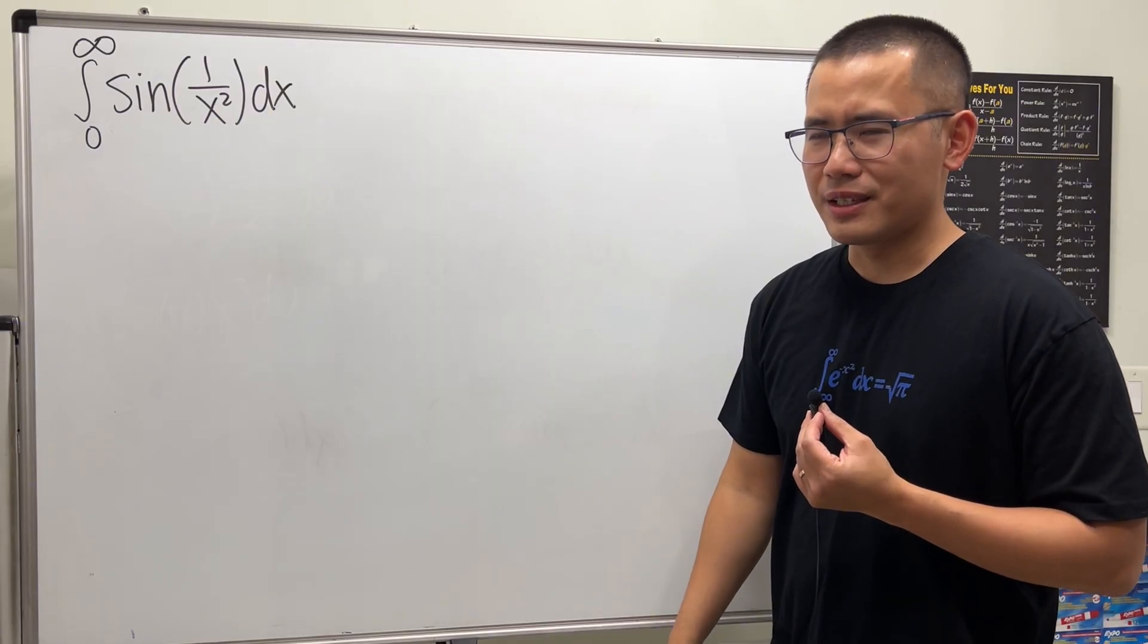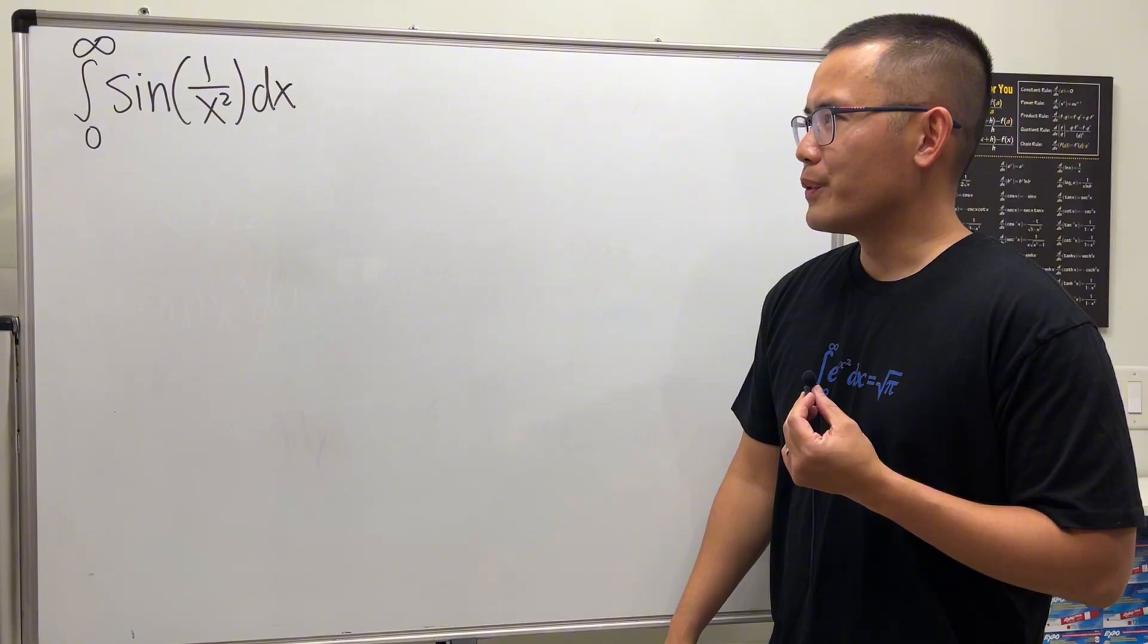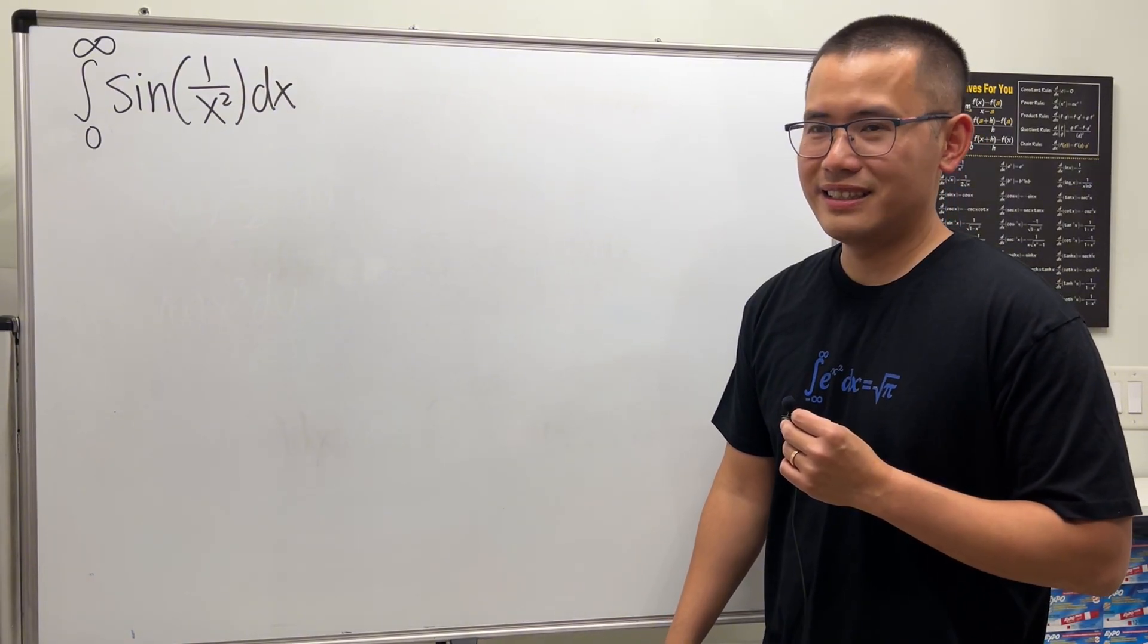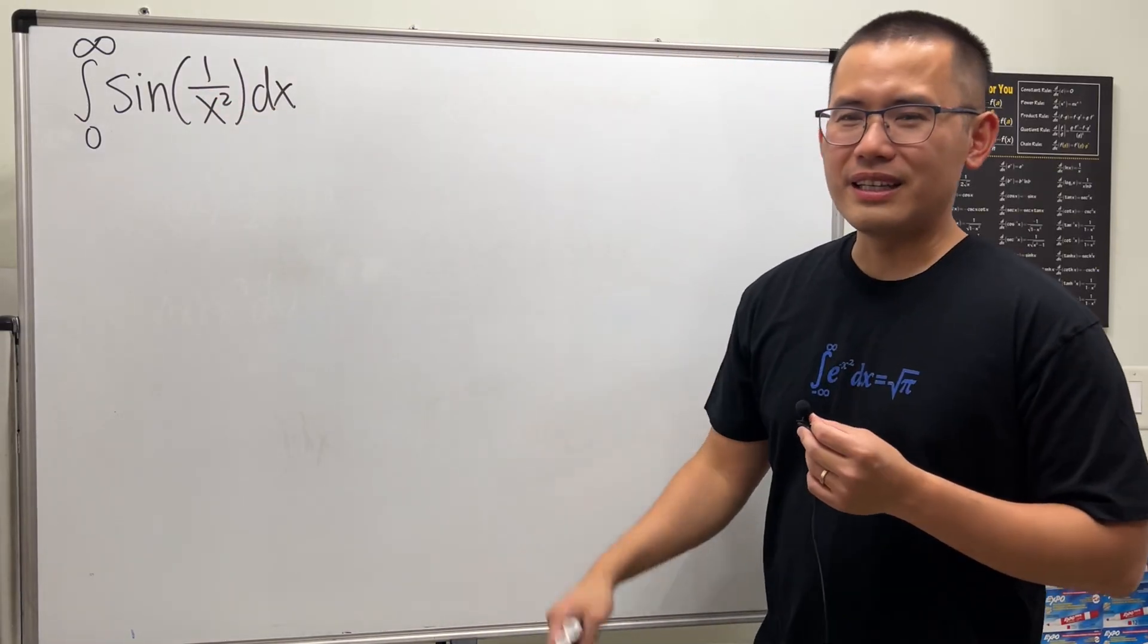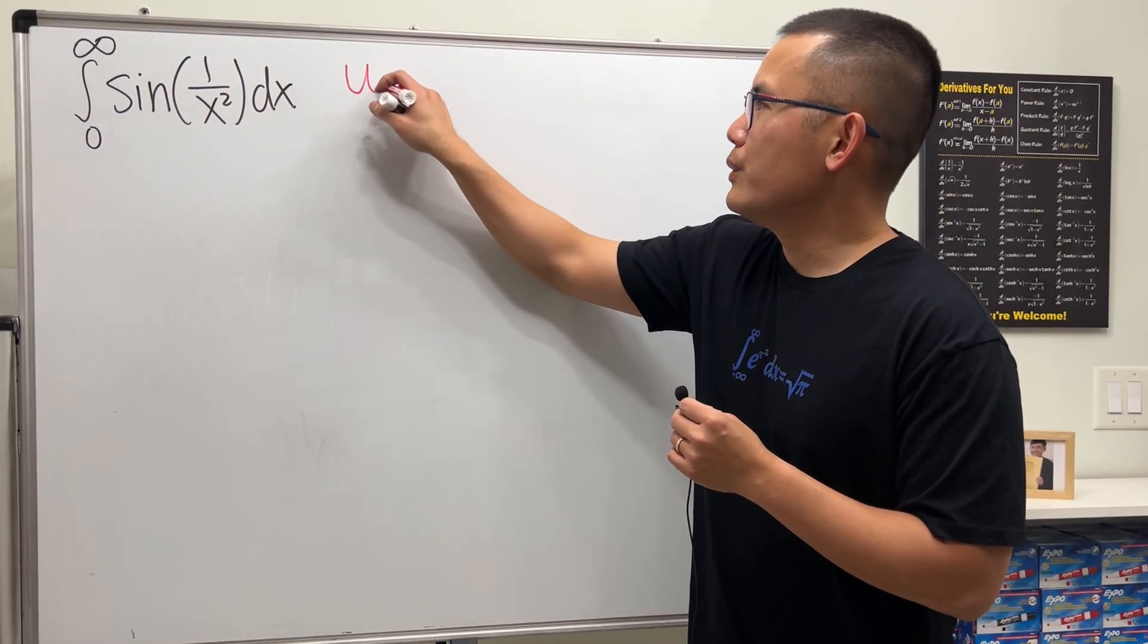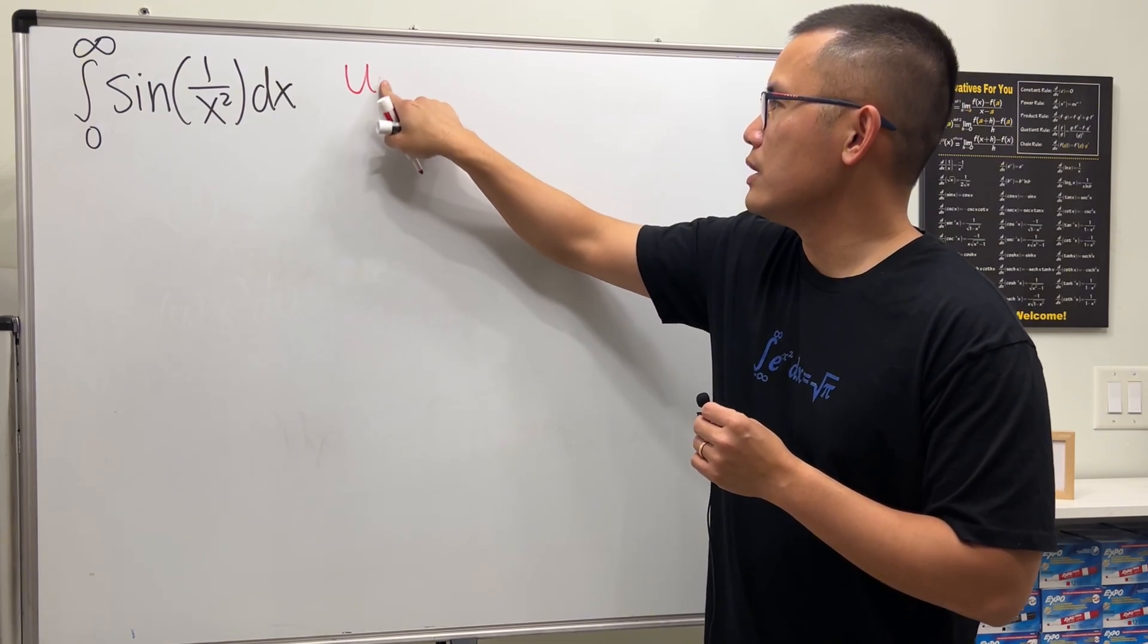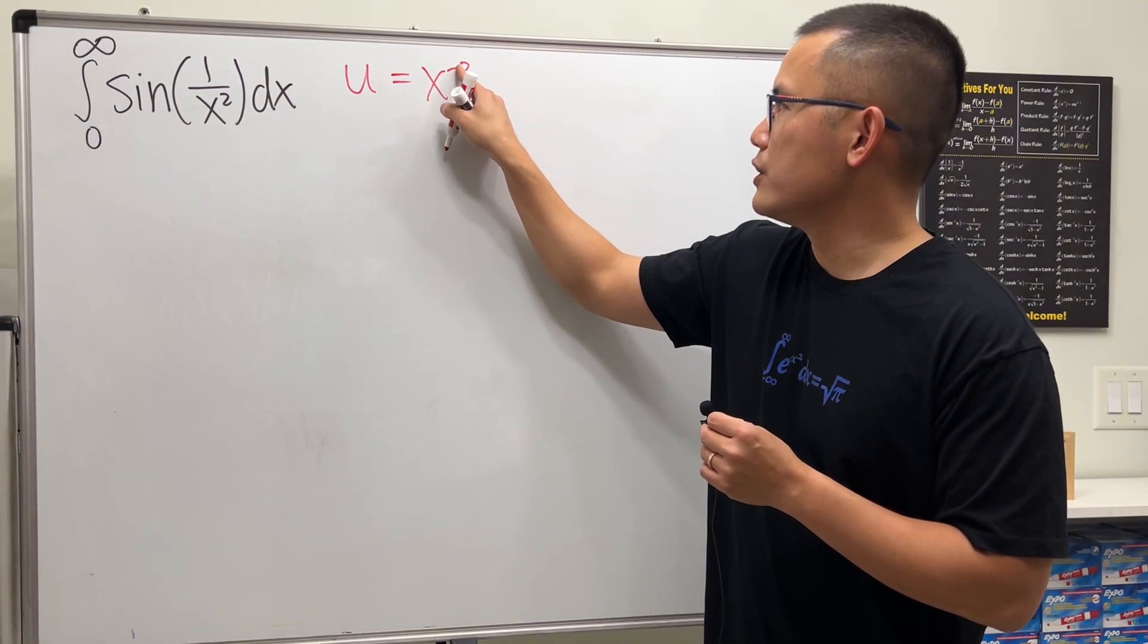Maybe you have a special technique, maybe complex analysis or whichever technique, but I would like to just go with the classic. Let me take a u sub, put u to be the inside, just like a natural choice. Let u equal to, I'm just going to write that as x to the negative 2 power so that I can differentiate this easily.